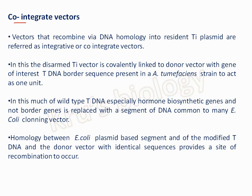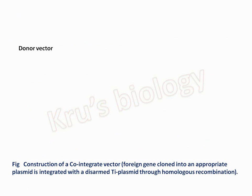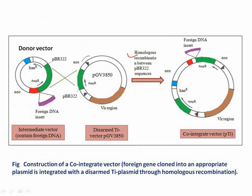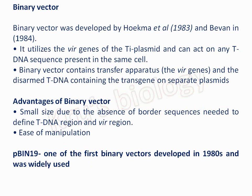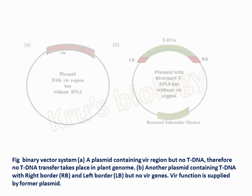Co-integrated vectors use recombination via DNA homology — recombination occurs between the plasmid PBR322 sequence and the Ti plasmid to form co-integrated vectors. Binary vectors have the Vir genes and the T-DNA containing the gene of interest on separate plasmids. An advantage of binary vectors is their small size and ease of transformation. PBin19 is the first binary vector and is widely used; it sometimes appears in multiple-choice questions in the ICAR-JRF exam.